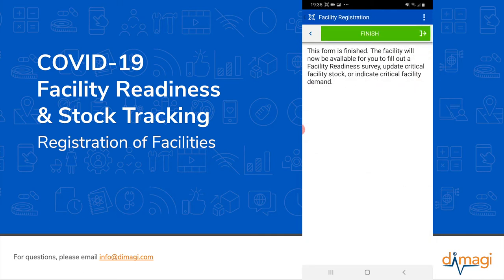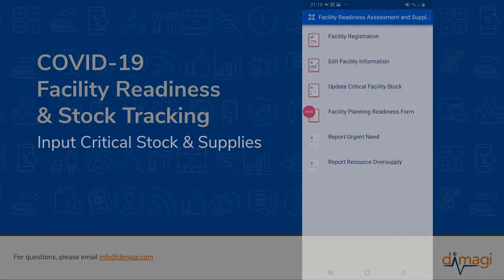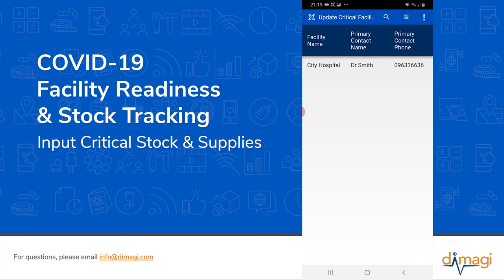This is the end of the facility registration form. I will now submit this form and we can continue on with facility tracking. Now that we've successfully registered this facility, we're going to begin by updating the critical facility stock. When we select this icon, it shows up our case list with our new facility that we just registered, along with the primary contact name and phone number — this helps the user quickly identify a facility if they oversee multiple.